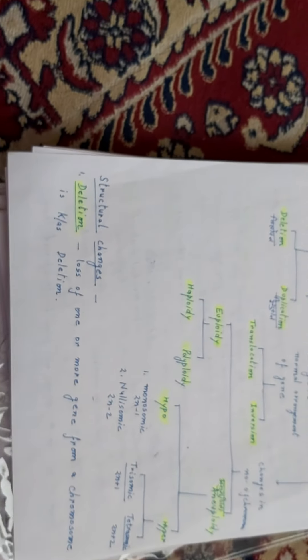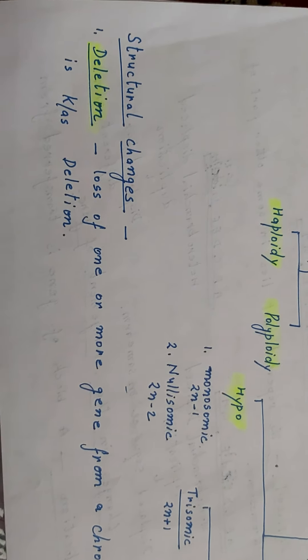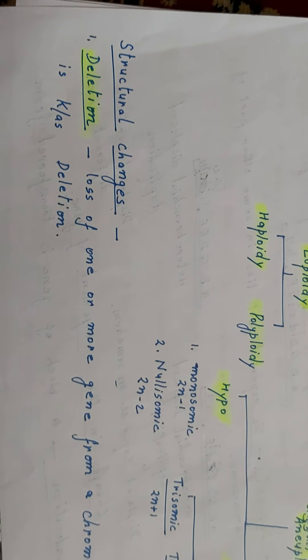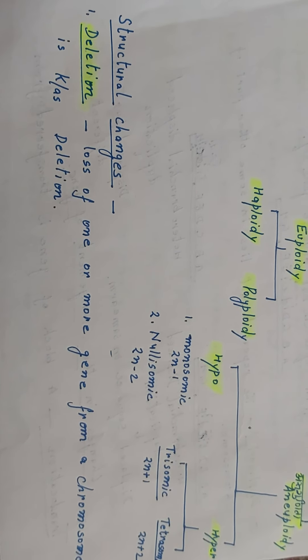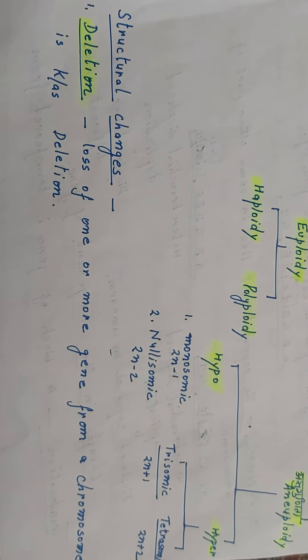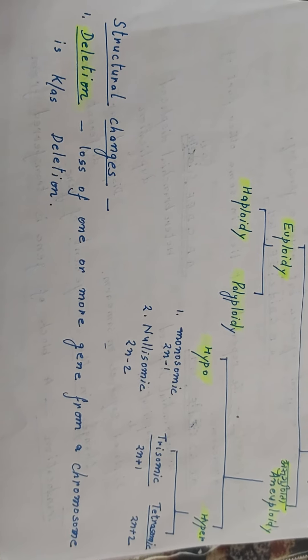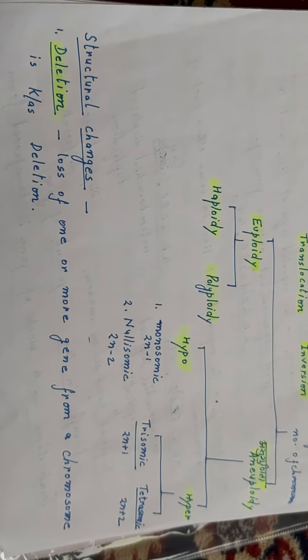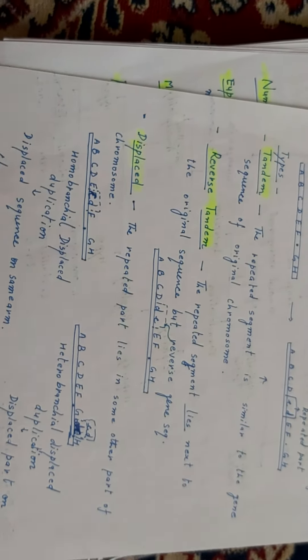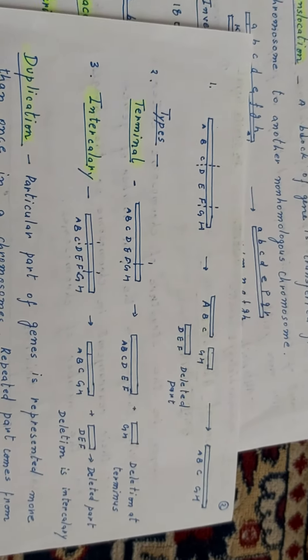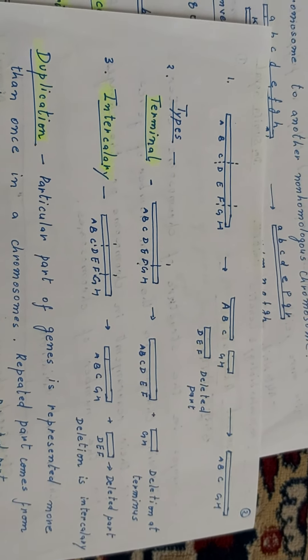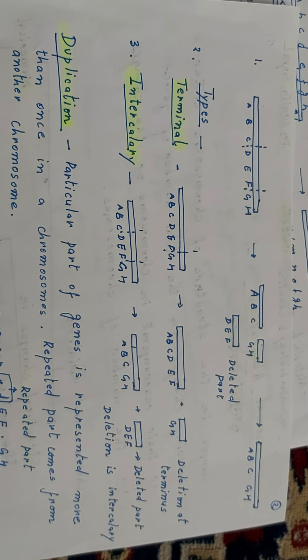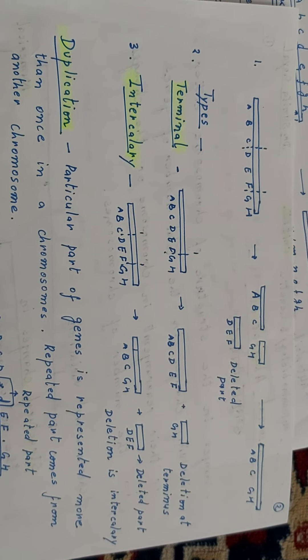Hypo means the number of chromosomes decreases, and hyper means the number of chromosomes increases. Hypo can be monosomic or nullisomic; hyper can be trisomic and tetrasomic. First structural change is deletion — vilopan — loss of one or more genes from a chromosome is known as deletion. A chromosome has the sequence A, B, C, D, E, F, G, H.